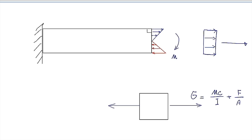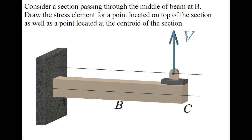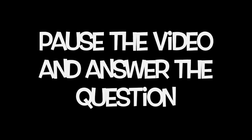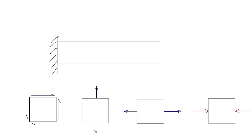Now I want you to practice the same concept and draw a stress element for a similar problem, but instead of having force P in that direction, there is a force in the vertical direction. Tell me what kind of stresses are produced at the same section with the force in the vertical direction. Which one is the right answer among these four options?